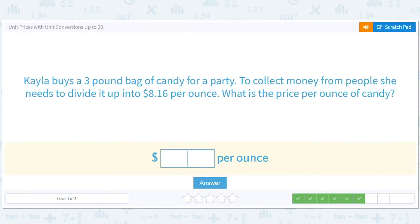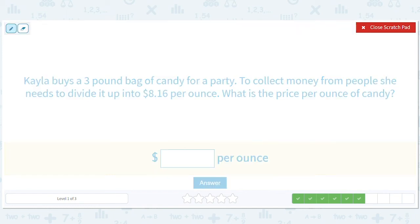Kayla buys a three pound bag of candy. To collect money from people she needs to divide it up. Eight dollars and 16 cents per ounce. What is the price per ounce of candy? We're going to just ignore this. I think it's basically saying a three pound bag costs eight dollars and 16 cents. What is the price per ounce of candy? Just based on the fact that that would be really expensive candy if it were $8.16 per ounce.